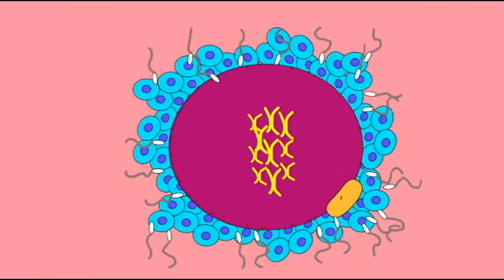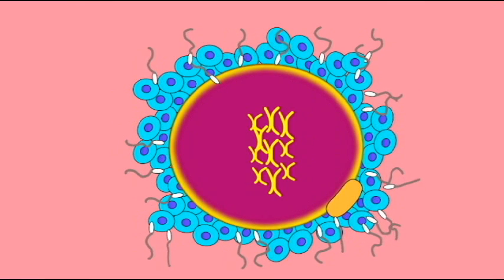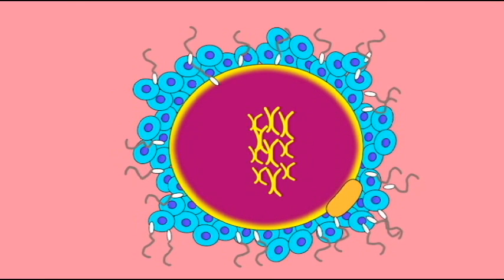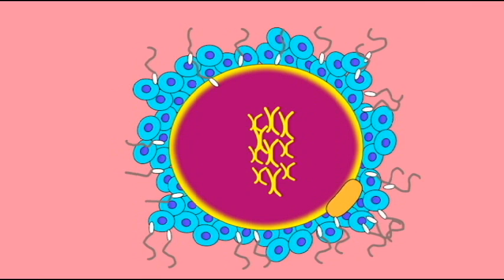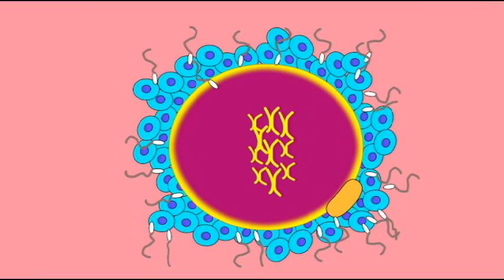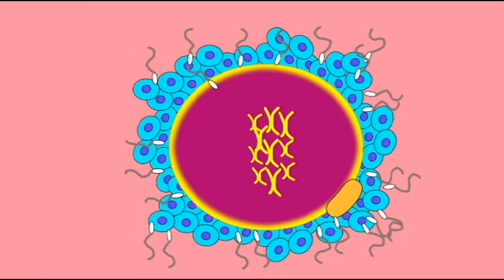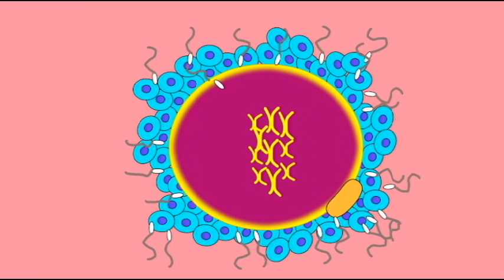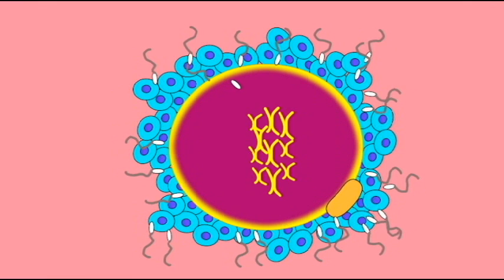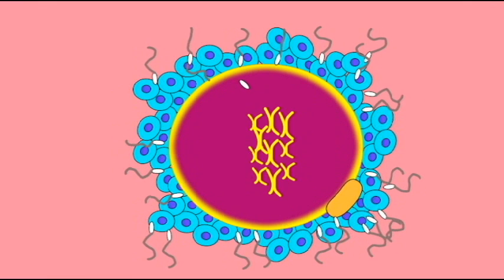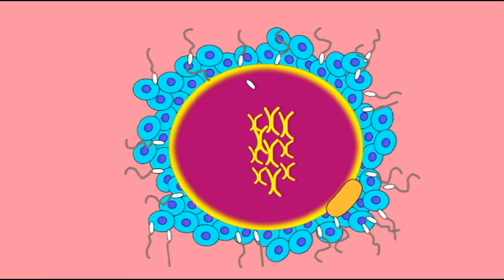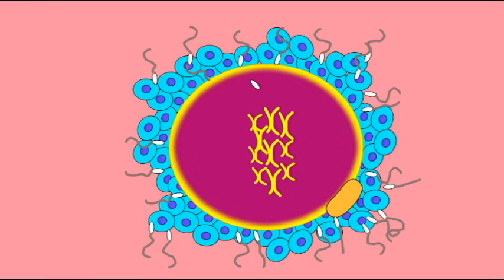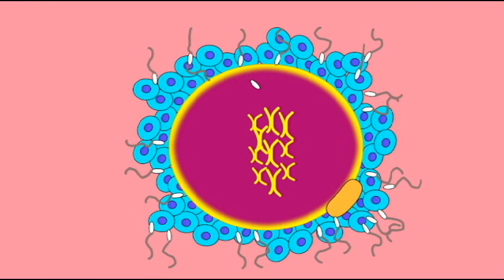This condition is known as polyspermy, and it would cause the embryo to fail — it would not develop to term. Therefore, the oocyte undergoes two changes immediately after fertilization which prevent the entry of multiple sperm and prevent polyspermy.